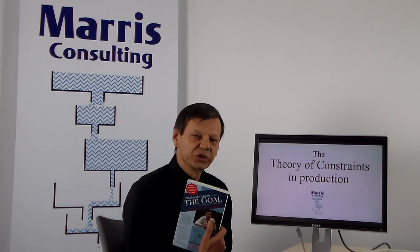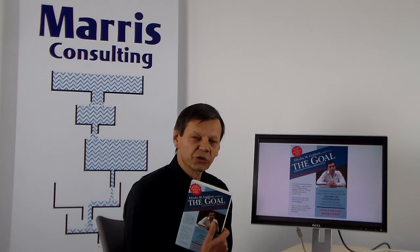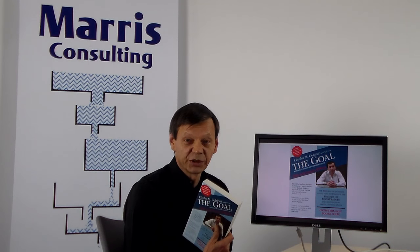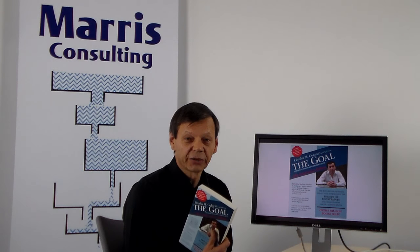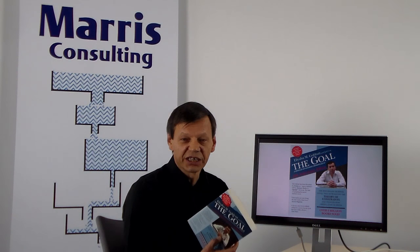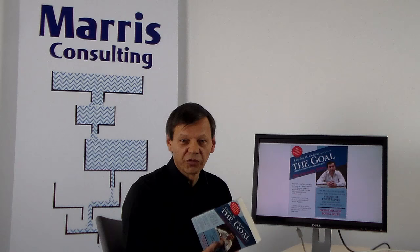You might have read this book — it's The Goal by Elie Goldratt. It's been sold in six million copies in 30 languages, and it's an explanation in the form of a novel of how the theory of constraints is applied in a factory.